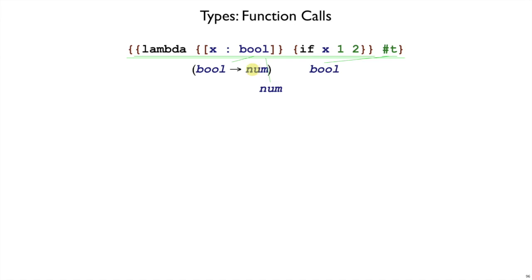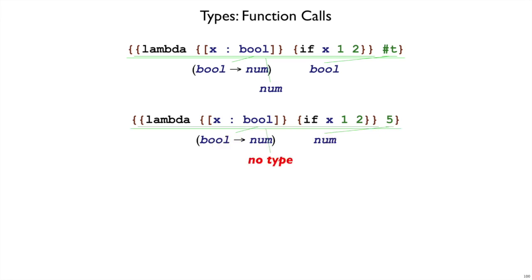The constraint then is that there is an arrow here for the function part, and that the argument matches up with that. If we try this example, we have our same lambda, which has type bool arrow num. We have a 5 here, which has type num. This num does not match the left of the arrow, and so we have no type for this application.